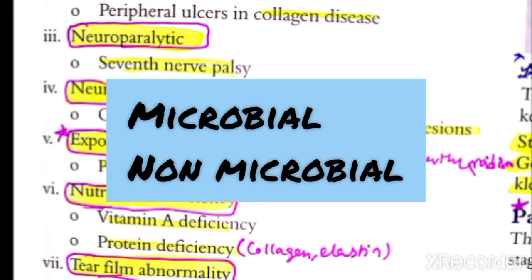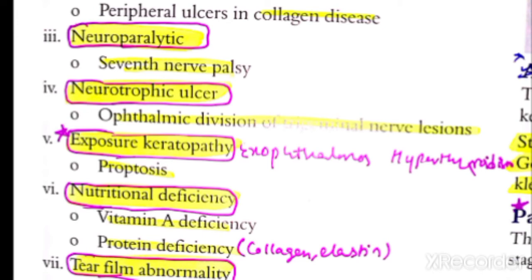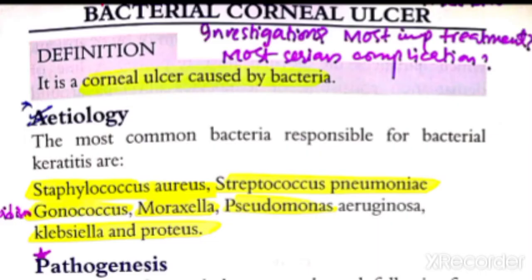Let's start the bacterial corneal ulcer. A corneal ulcer can be caused by different reasons, but now we will discuss the bacterial corneal ulcer first. Corneal ulcer, as we saw, is when excavation occurs due to sloughing off of necrotic inflammatory tissue. When this is caused by bacteria, it is called a bacterial corneal ulcer. Different bacteria can cause corneal ulcers.